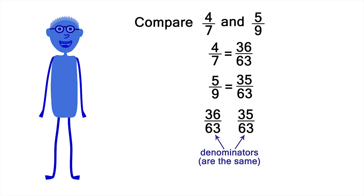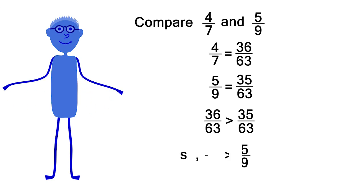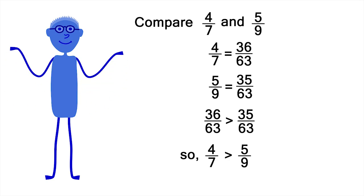Now we can compare the numerators, because the denominators are the same. 36 is bigger than 35, or 36 sixty-thirds is bigger than 35 sixty-thirds, which means 4 sevenths is bigger than 5 ninths.